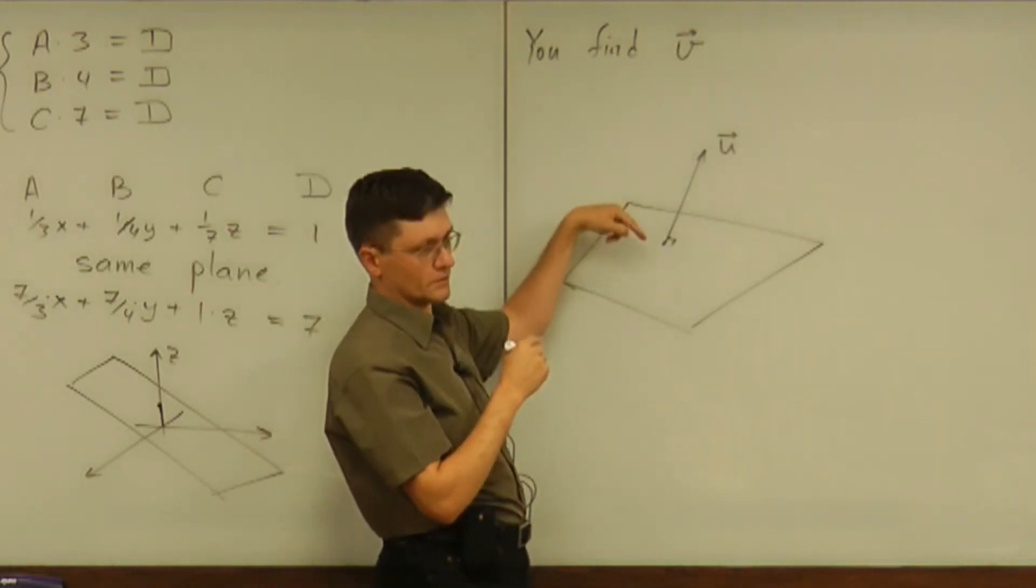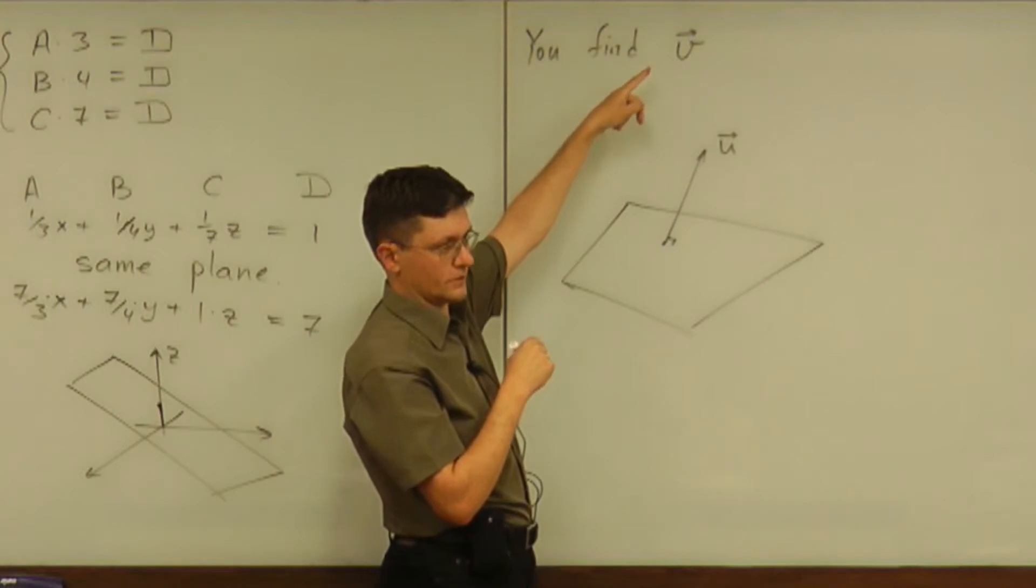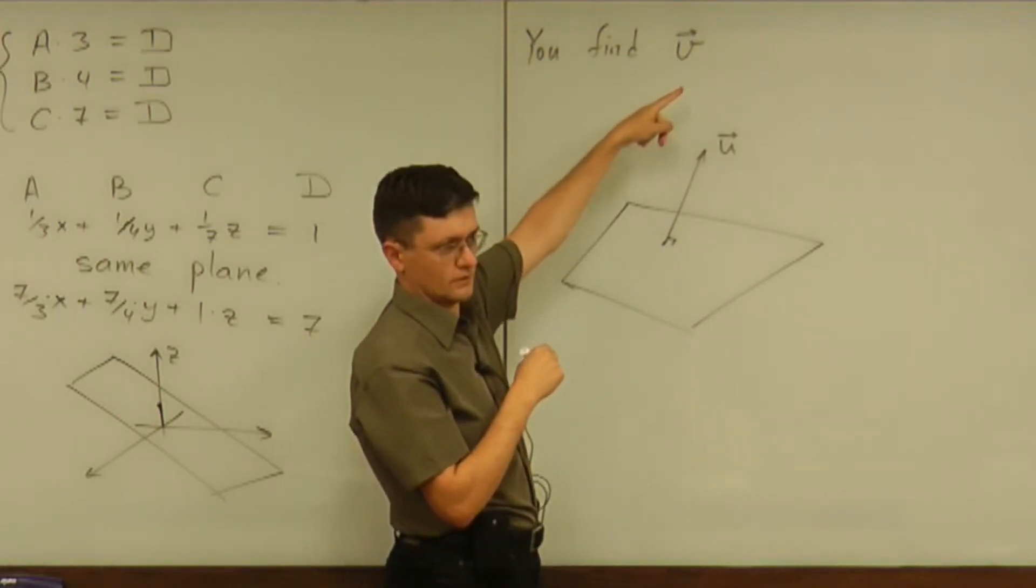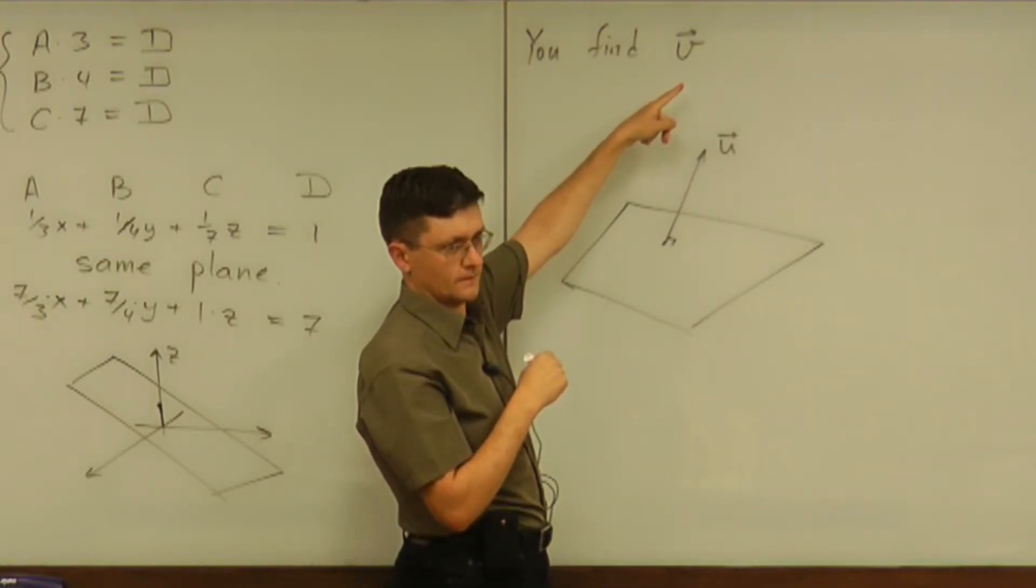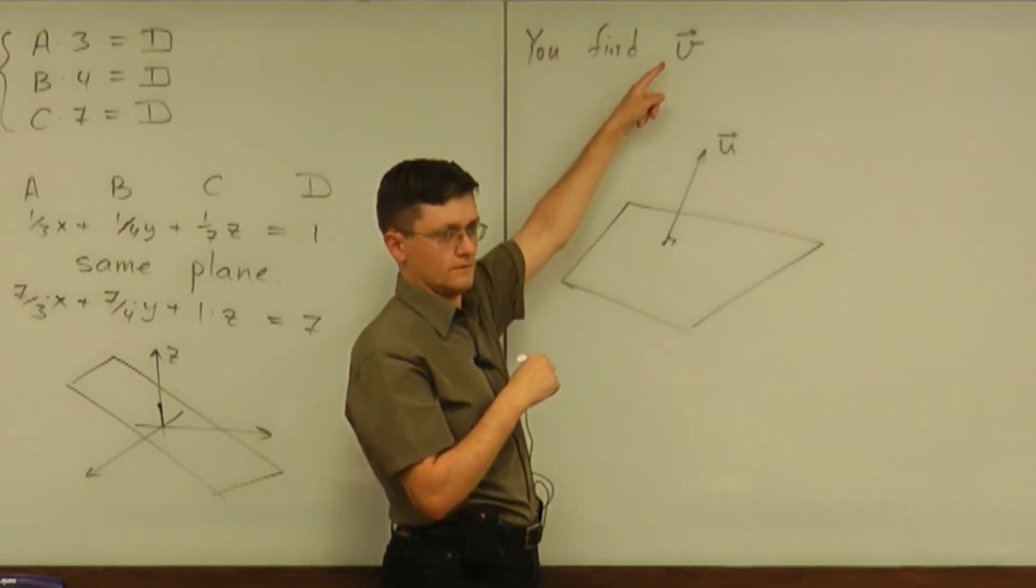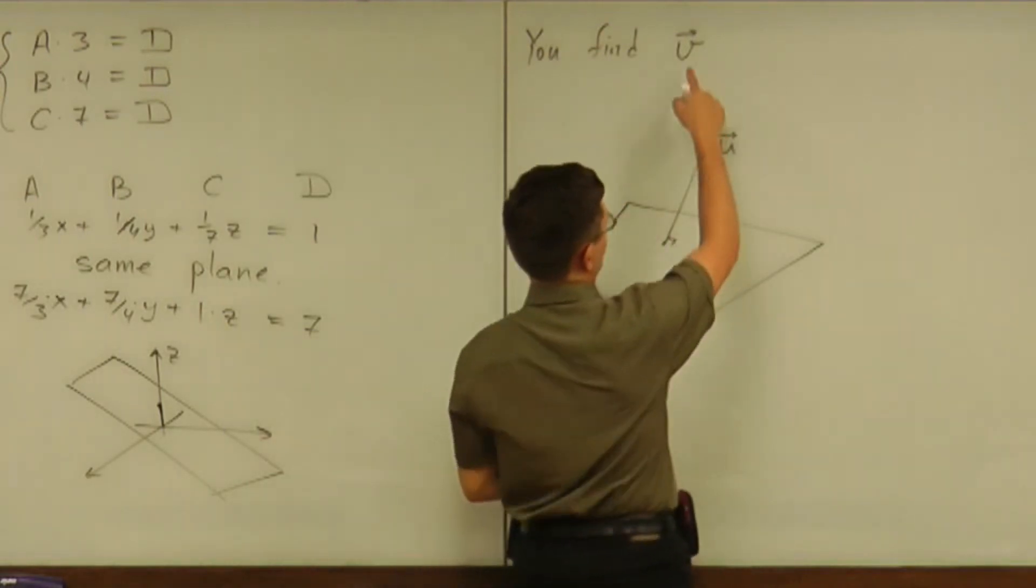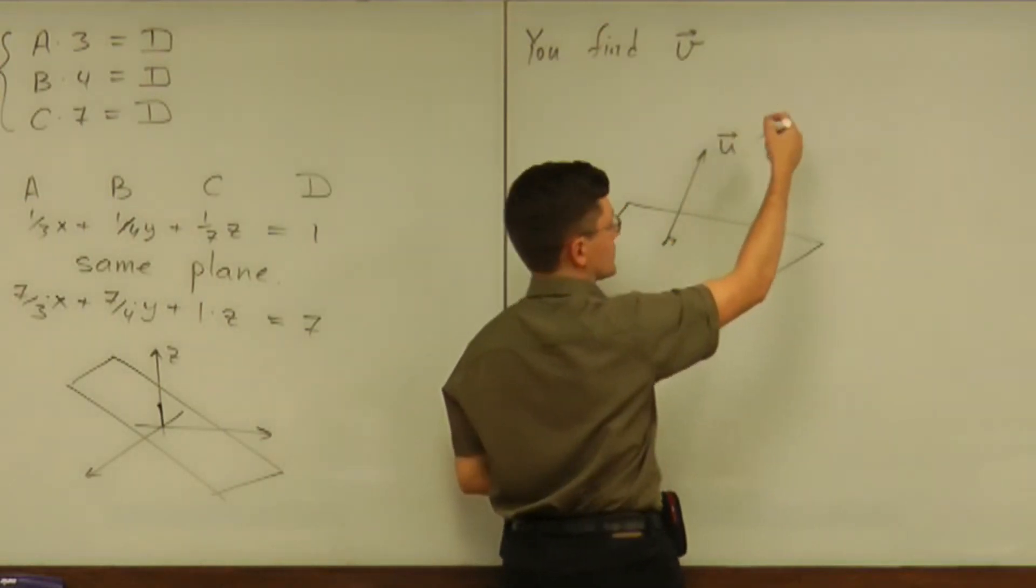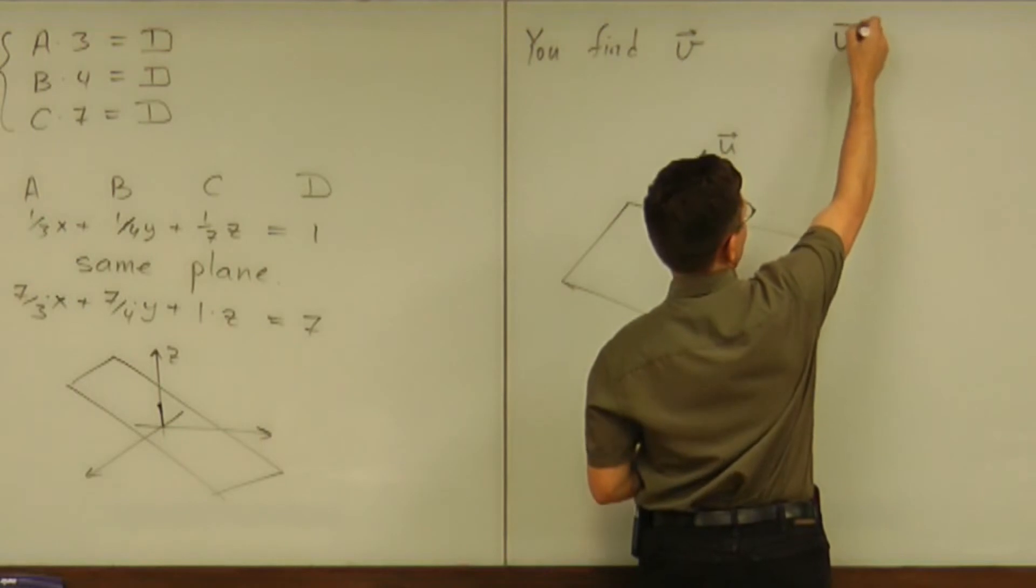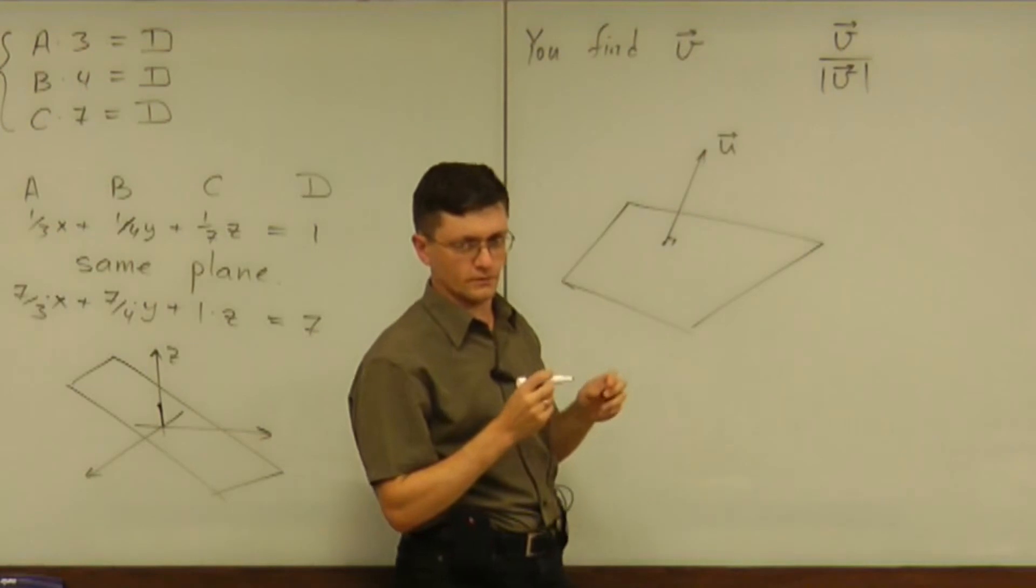But I'm asking you to input into WebAssign, not v, but something else. I'm asking you to input a unit vector, a different vector. Do you know how to make any vector a unit vector? Divide by the magnitude. So you found this vector, and then you keep working on the problem. You take that, divide by its magnitude, and then you get a unit vector.